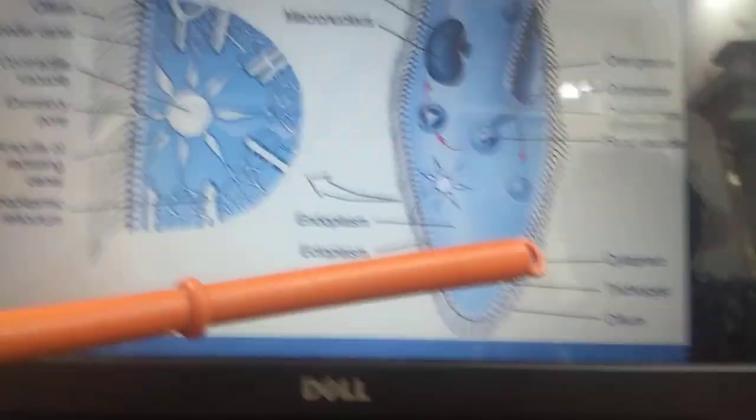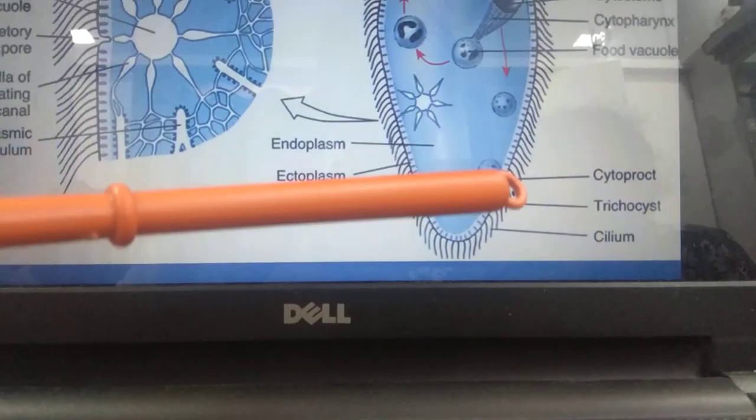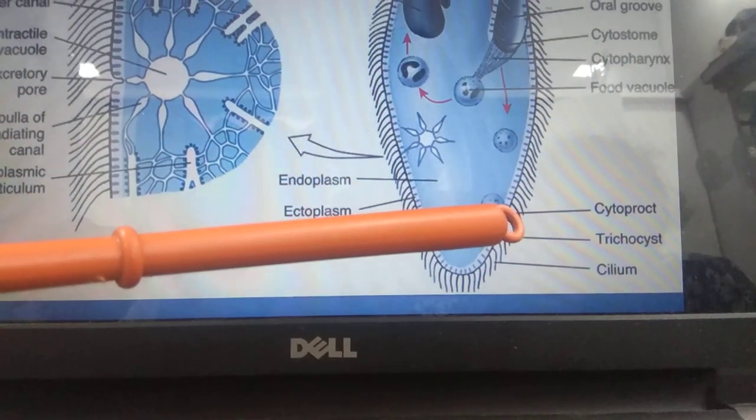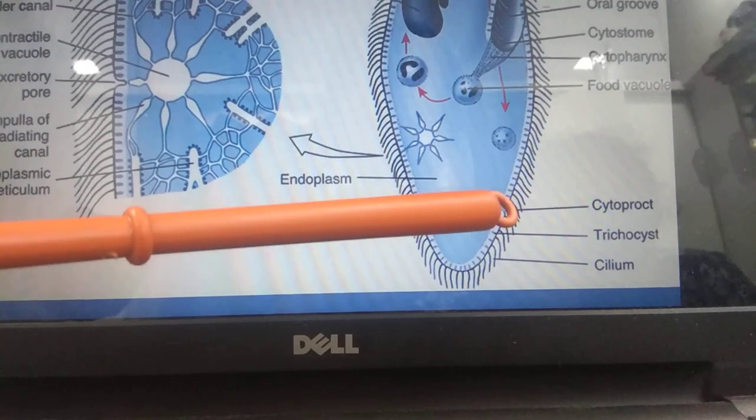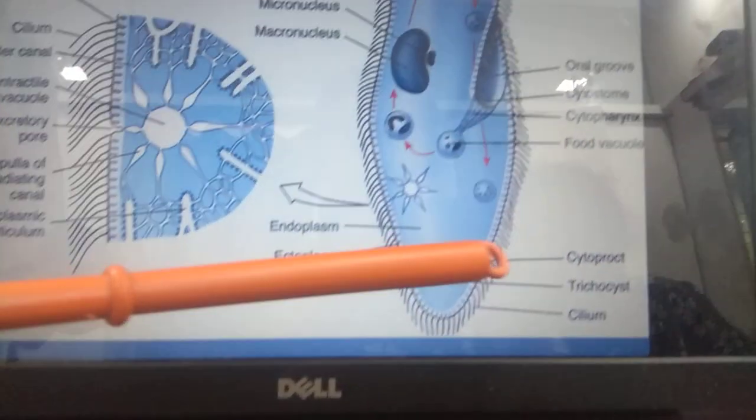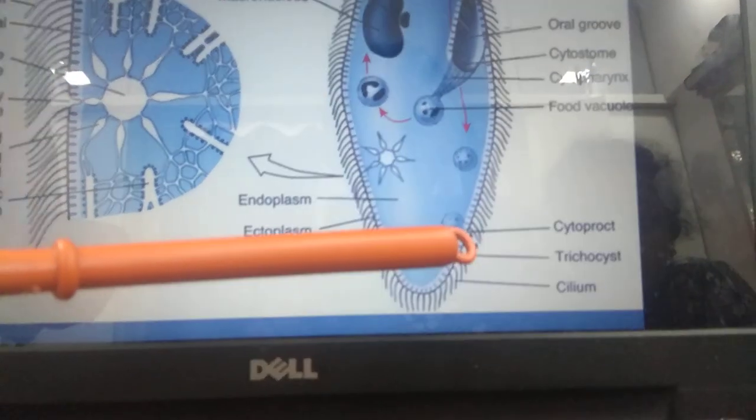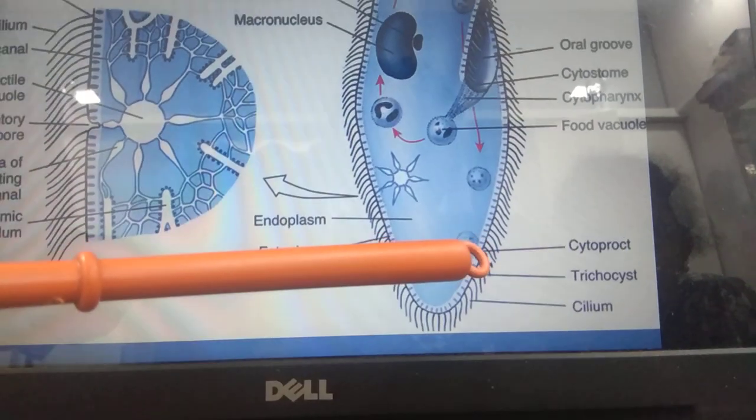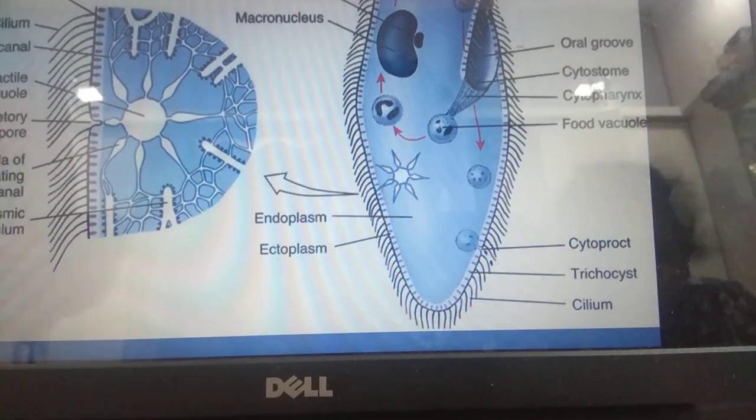On the lower side, on the ventral surface, another small aperture is present. This is called cytopict or cytoproct. This is similar to the anus of higher animals and performs the function of ejecting undigested food material.